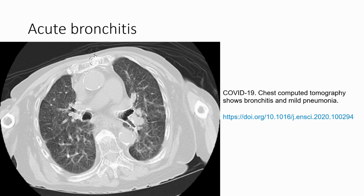On CT, in this case of COVID-19, there is bronchitis and mild pneumonia. We see increased thickening of the primary and secondary bronchi of both lungs, increased attenuation of the wall, and some ground-glass opacity in both lungs.